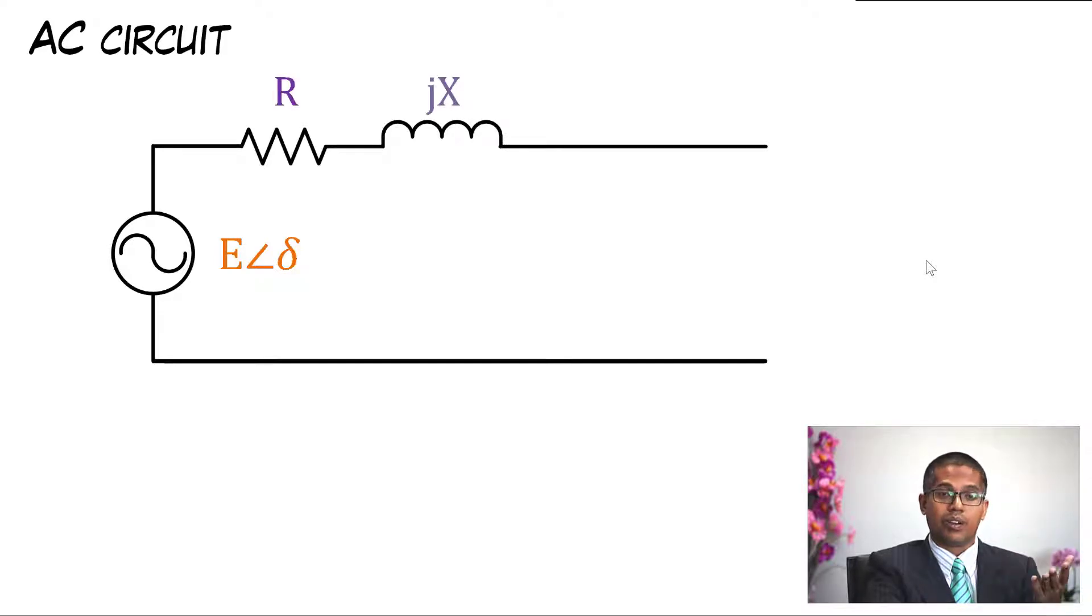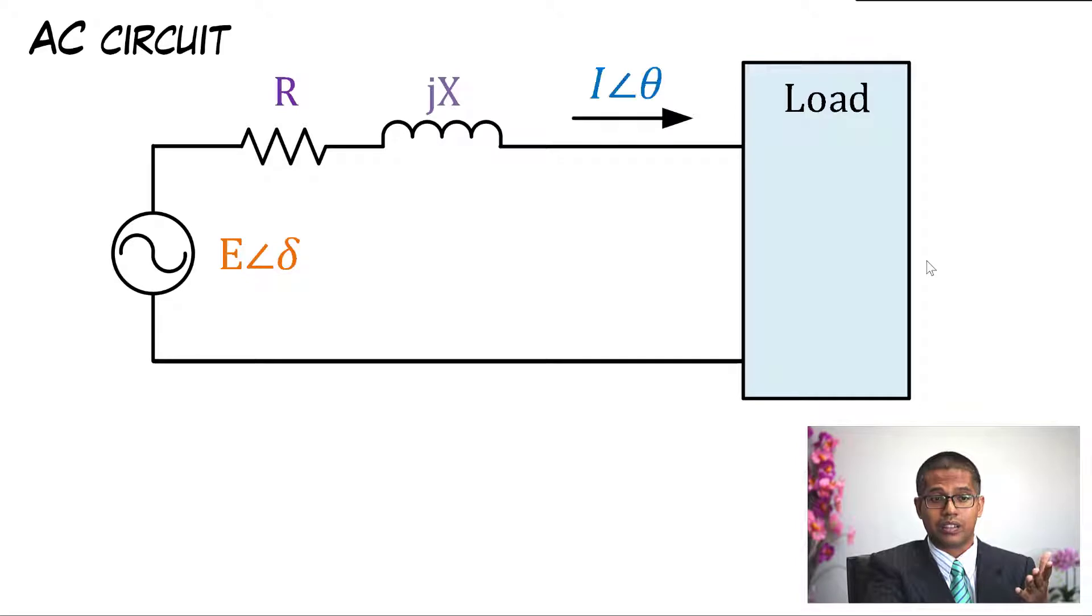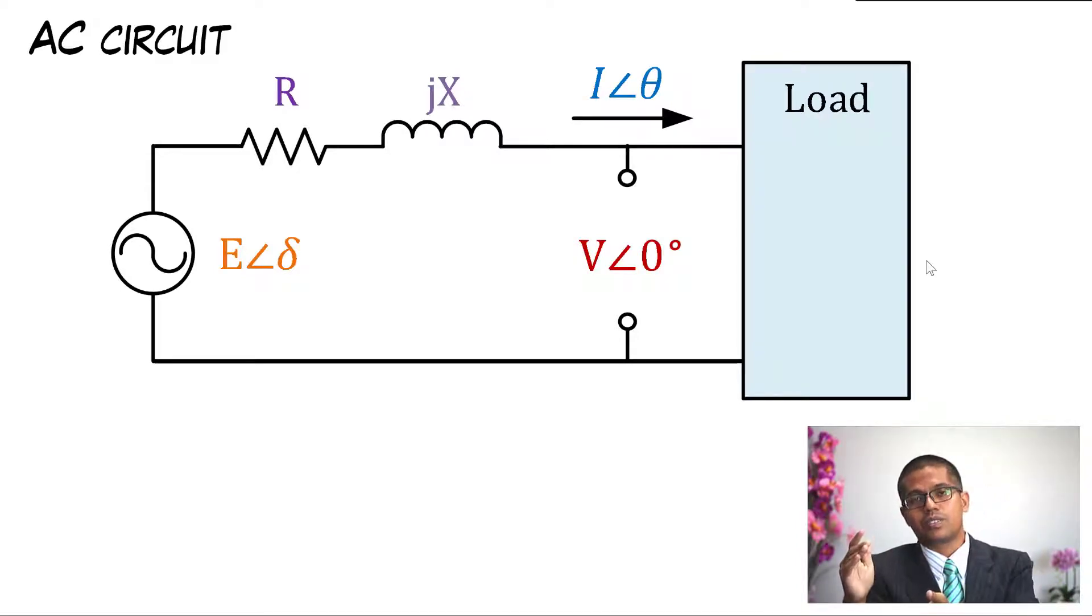Let's start. Consider an AC circuit. We got a voltage source E with the angle of delta. We got line impedance R plus jX. We got a load connected to the circuit, and this load draws current, load current, with the angle of theta. And then we have another voltage that we measure on the load side. So there's two voltages: voltage at the source side and the voltage at the load side, and in between them there's line impedance.